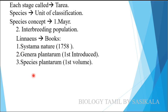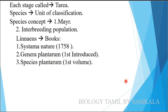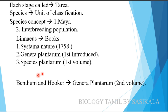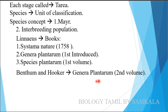Linnaeus wrote three important books. One is Systema Naturae in 1758. Two is Genera Plantarum, which was first introduced by Linnaeus. Another work is Species Plantarum. Bentham and Hooker also worked on Genera Plantarum — they produced the second volume.